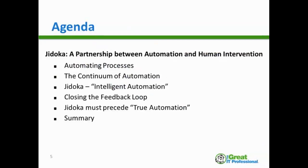Good morning everybody. Today we're talking about Jidoka, which comes from the Toyota Production System school of thought, or the more traditional lean methodologies. We're going to go into what it is and explain the components. It's going to be a fairly quick presentation at 30 minutes. We'll talk about what it means to automate processes, introduce something called the continuum of automation, and then talk about how Jidoka works and true automation. We'll hold questions till the end.